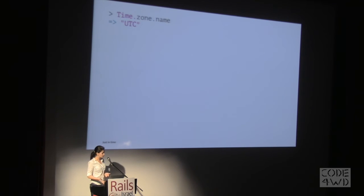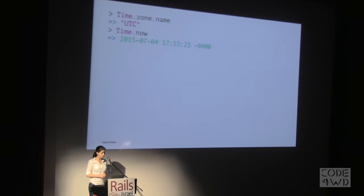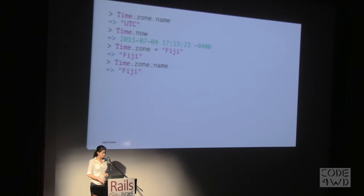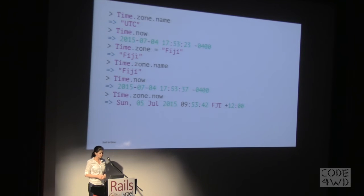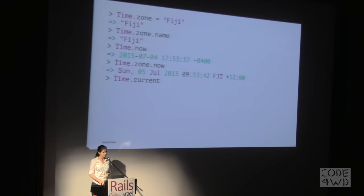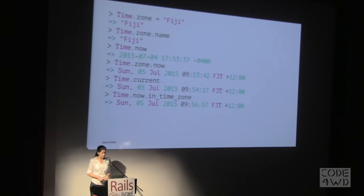Let's play a bit in console. If we do Time.zone.name, we can see that we are in UTC. If we look at Time.now, I was in the States and it was about almost 6 p.m. in the afternoon — four hours after UTC. If I set the time zone to Fiji and do Time.now, I'm still seeing New York because this is my machine time, not the Rails application time. If I want the Rails application time, I can do Time.zone.now, which gives me the time in Fiji — a day later at about 9 or 10 a.m. We can also get that by doing Time.current, which gives the same result, or Time.now.in_time_zone.